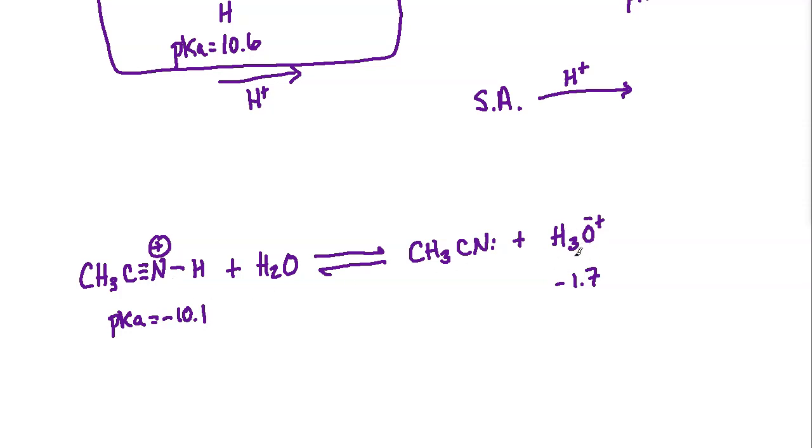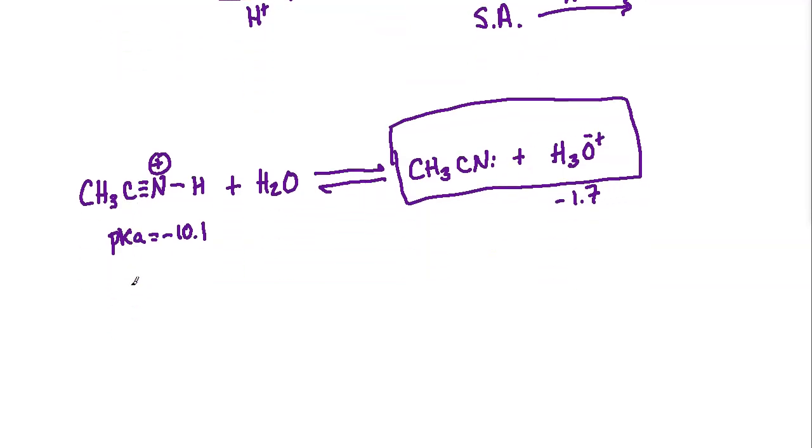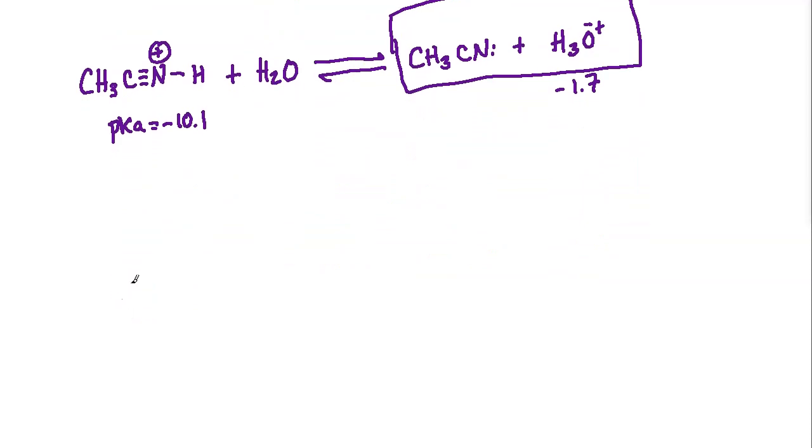So this is far more acidic than the hydronium. So last time the hydronium was a stronger acid pushing things to the left. This time it is going to be the right hand side that will be favored or dominate the equilibrium. And that's because this protonated acetonitrile is so much stronger as an acid in comparison to the hydronium that it pushes everything over to the right and the products end up being favored.